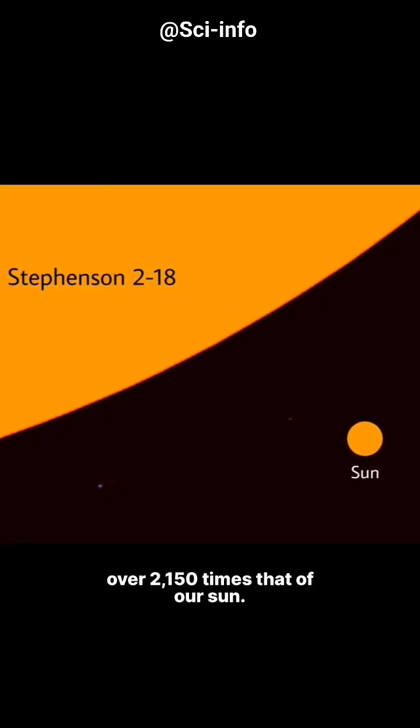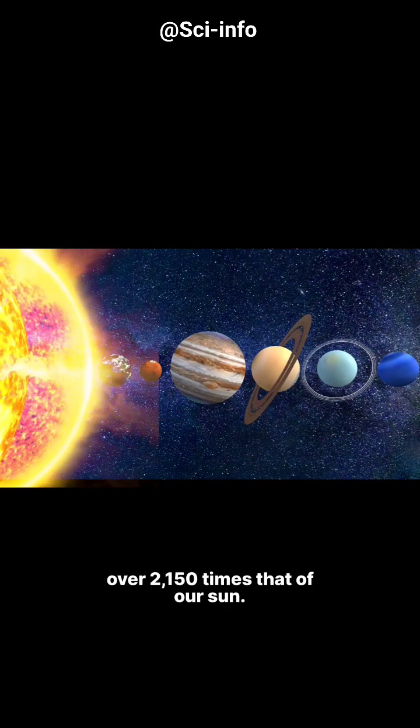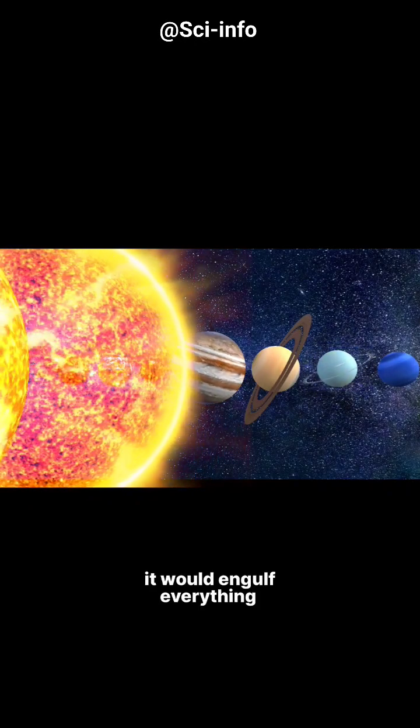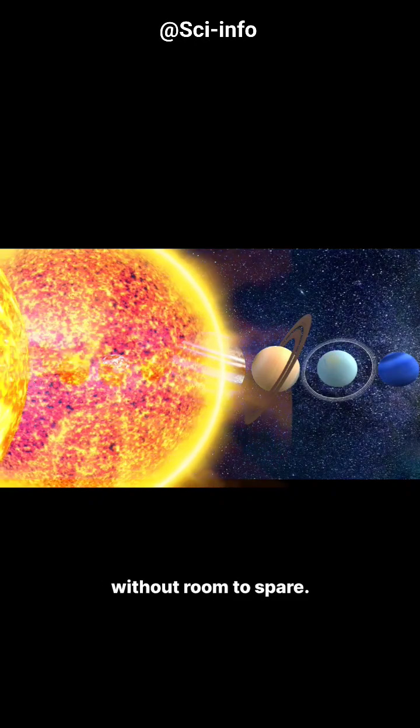Its estimated radius? Over 2150 times that of our sun. To put that in perspective, if Stevenson 218 replaced our sun, it would engulf everything from Mercury to Jupiter, without room to spare.